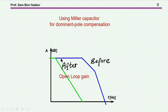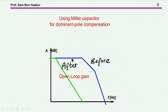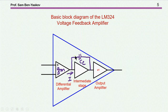This capacitor helps with compensation — that is, to stabilize the system especially when the gain is one, which is the worst case. Before compensation, the open-loop transfer function has instability at unity gain due to significant phase lag. After compensation, with this capacitor, we move to a lower dominant pole at low frequency, and consequently the phase margin at crossover for unity gain is much better. That is the reason for this capacitor.